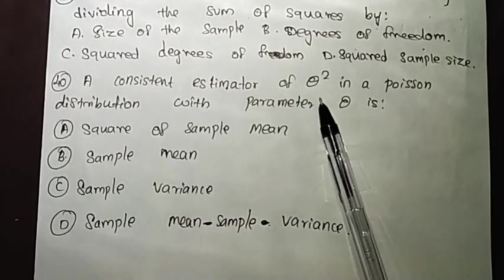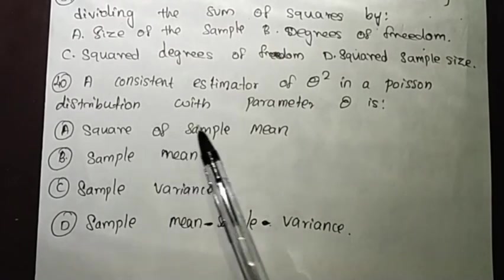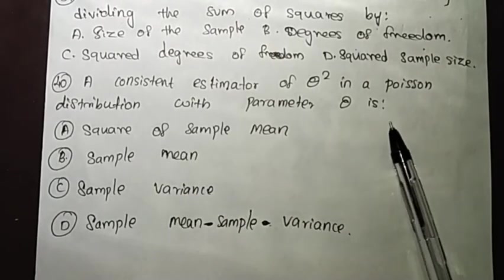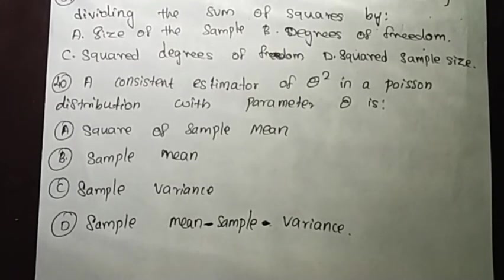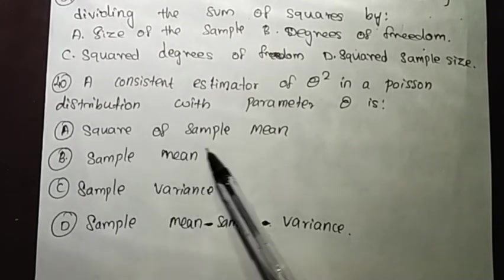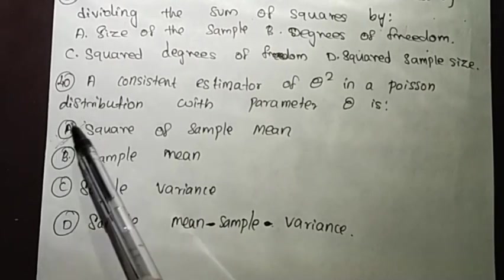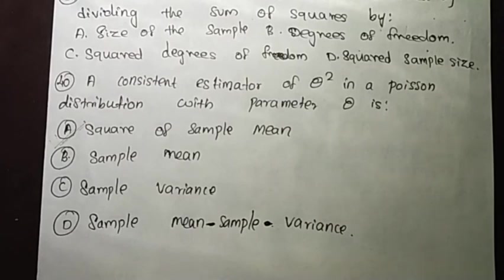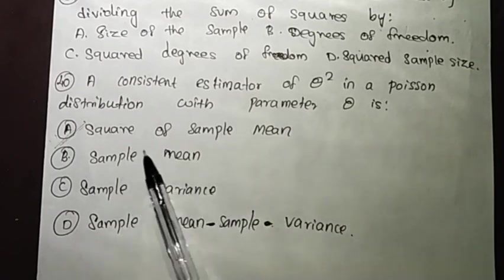A consistent estimator of theta squared in a Poisson distribution with parameter theta is the square of the sample mean.